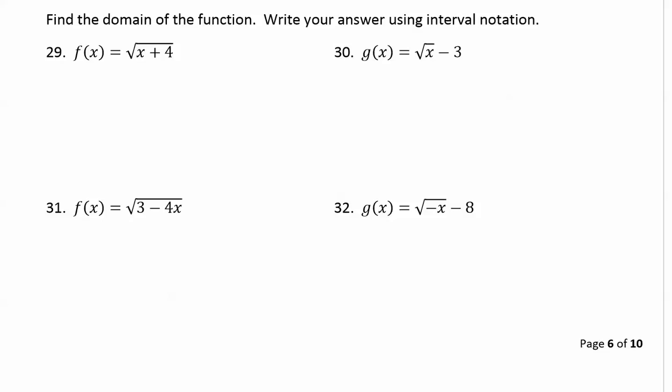For this next group of problems we're going to find the domain for radicals. Now a square root graph starts at x equals 0 because the square root of 0 is 0. If we go to x equals 1, the square root of 1 is 1.